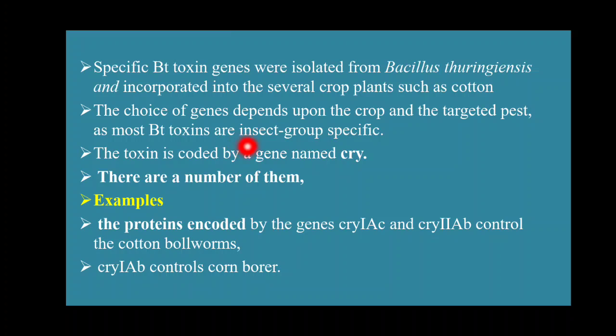The toxin is coded by a gene named cry. There are many varieties of these toxins, all coded by the cry gene. For example, the protein encoded by gene Cry1AC and Cry2AB controls the cotton bollworms, and Cry1AB controls corn borer. These are some examples of proteins produced from Bacillus thuringiensis which can help the plant from pests and protect it from these types of insects.